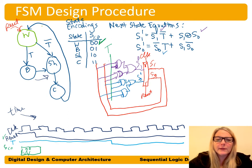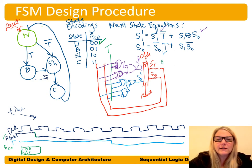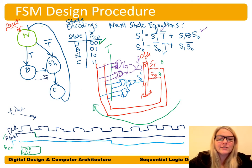After reset goes low, the circuit starts calculating the next state. With state bits 00 (W state), they feed back into the next state combinational logic. With S1=0, S0=0, and T=1, let's see what S1 prime calculates to.